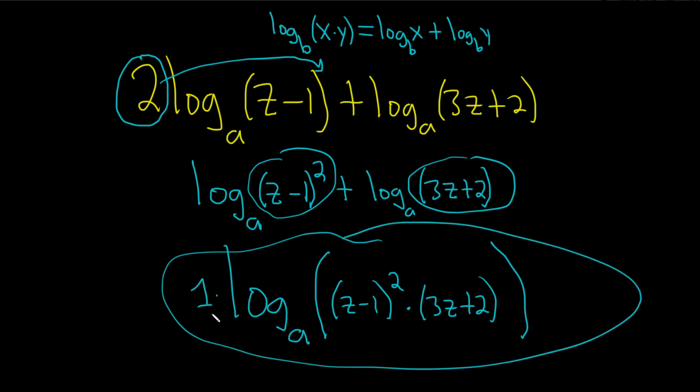I believe the reason the question says that is because they want to make sure you don't have a number here. Like, if you had a 5 here, you could bring it up using the power rule. So, you want to make sure you use all the rules and write this as a single logarithm. I hope this video has been helpful. Good luck.